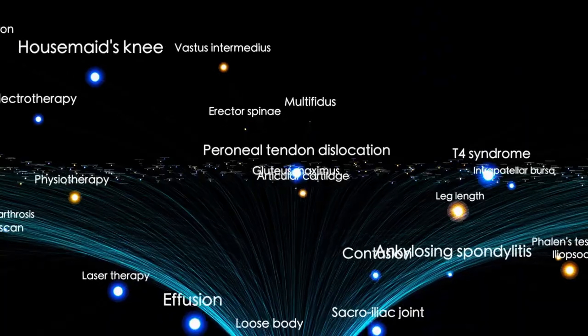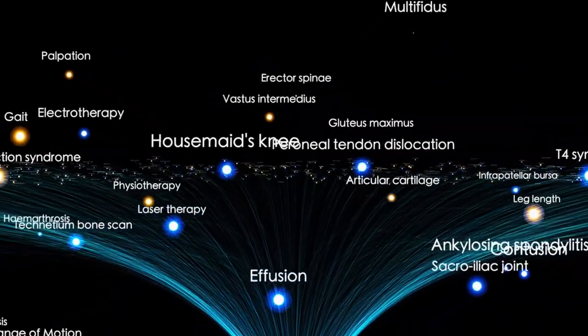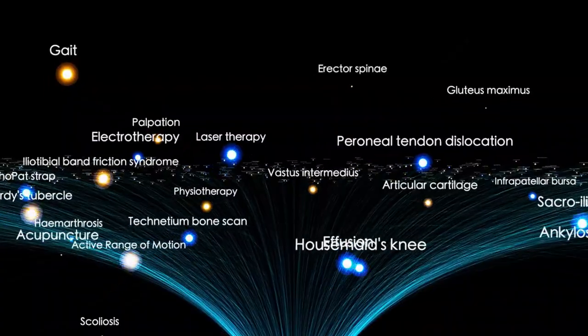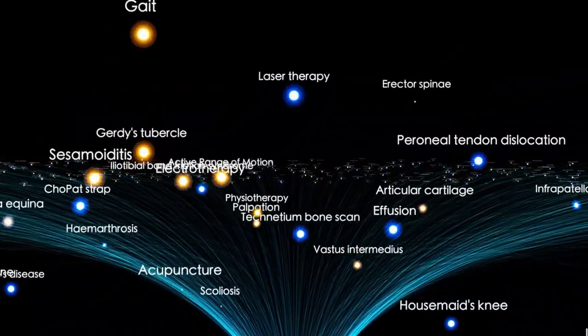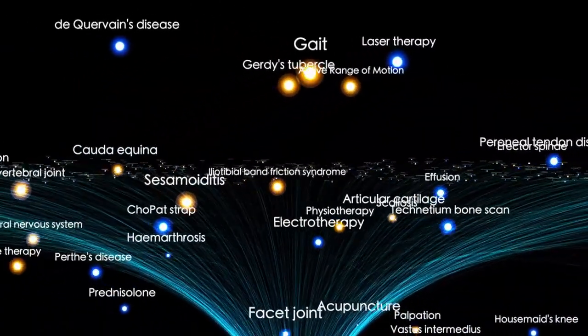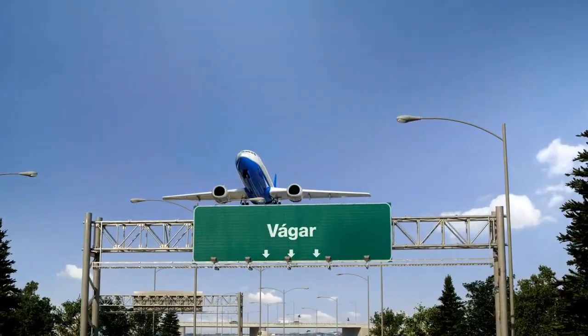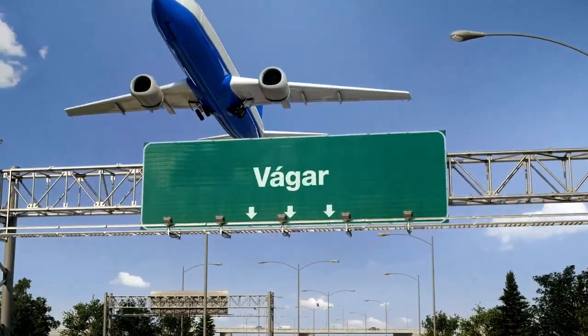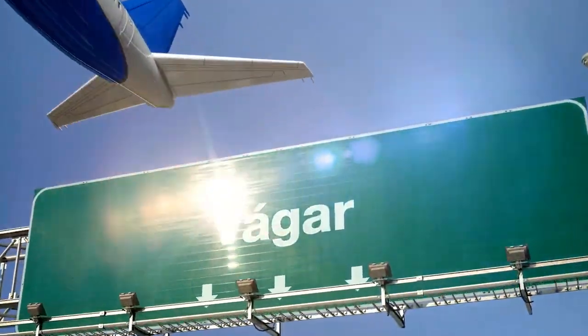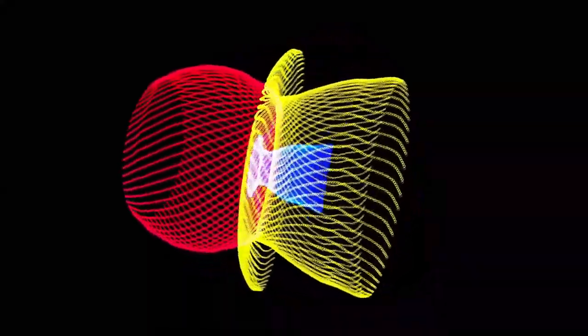Recognizing the rare opportunity, NASA fast-tracked development of the Voyager program. Two identical spacecraft, Voyager 1 and Voyager 2, were constructed to take advantage of the alignment. They were launched just 15 days apart—Voyager 2 on August 20th, 1977, and Voyager 1 on September 5th, 1977. Despite being launched second, Voyager 1 followed a faster trajectory and overtook its sibling on the way to Jupiter and Saturn.